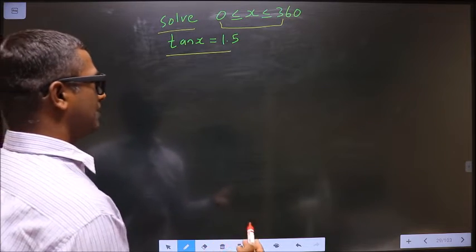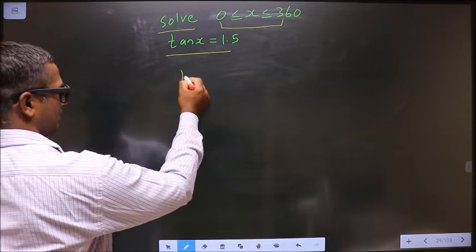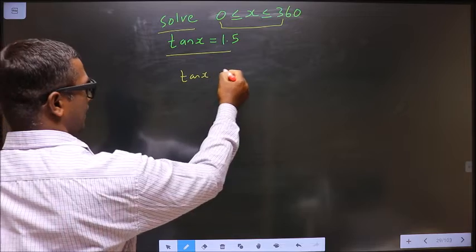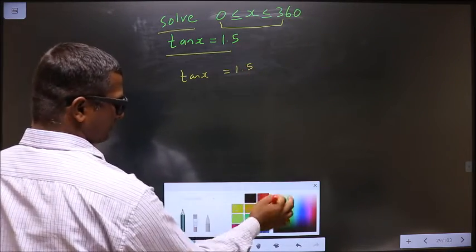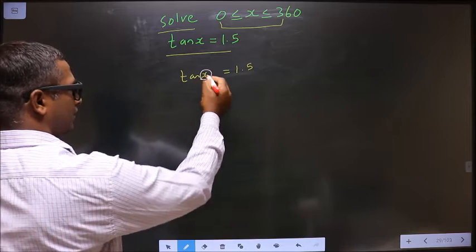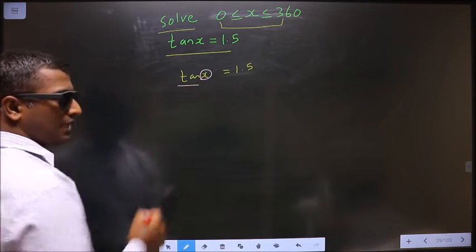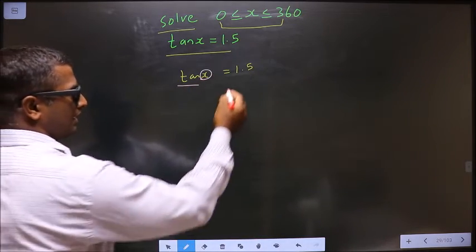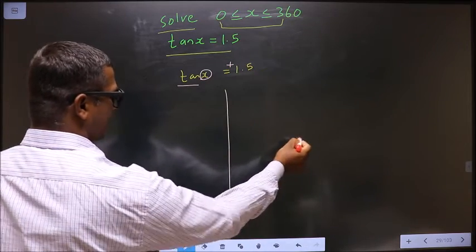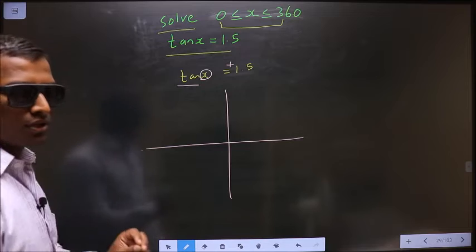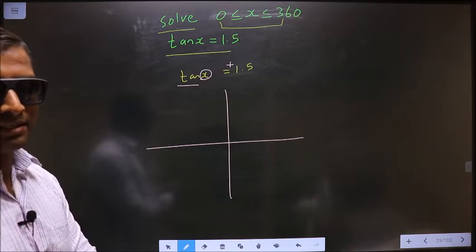Now the given equation is tan x equal to 1.5. To get the values for x, here you have tan and here it is positive. So now you check in what all quadrants is tan positive.